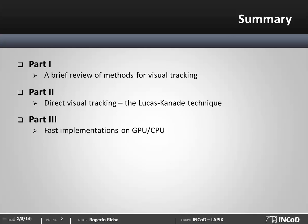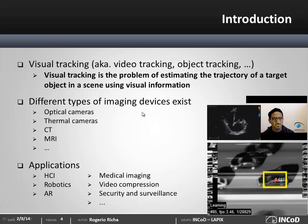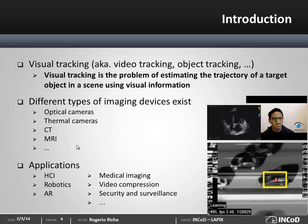Let's begin with a discussion on visual tracking. Visual tracking, also referred to as object tracking or video tracking, can be formulated as the problem of estimating the trajectory of a target object in a scene using visual information. Visual information can come from different imaging sources — optical cameras, thermal cameras, ultrasound, x-ray, or magnetic resonance. Visual tracking is a very hot topic because it has applications in a huge variety of problems, such as human-computer interaction, robotics, augmented reality, medicine, and military, just to cite a few.